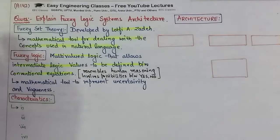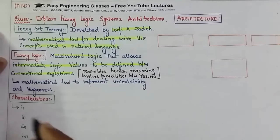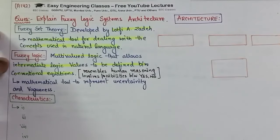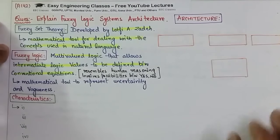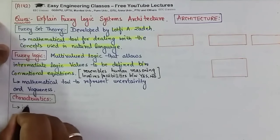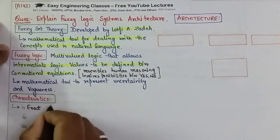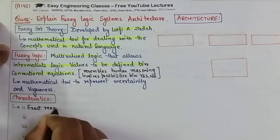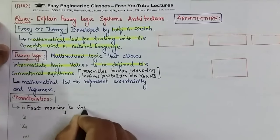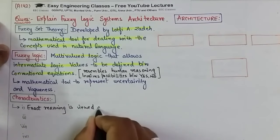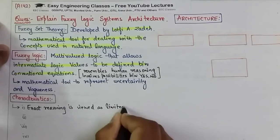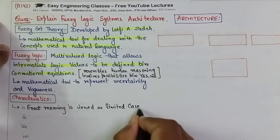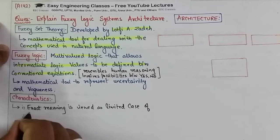Now let's see some characteristics. First of all, the characteristic is that exact reasoning is viewed as limited case of approximate reasoning.